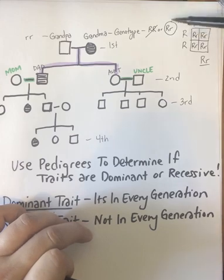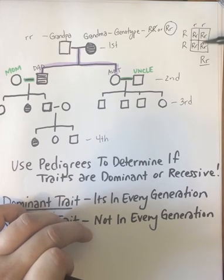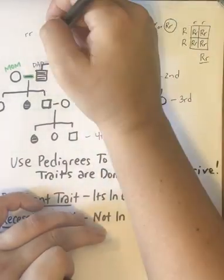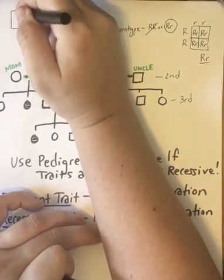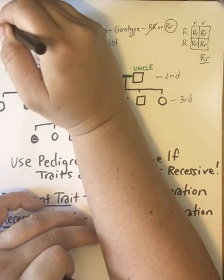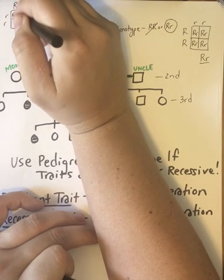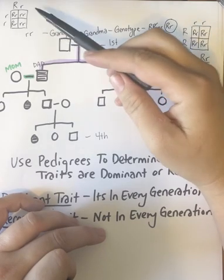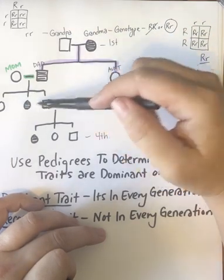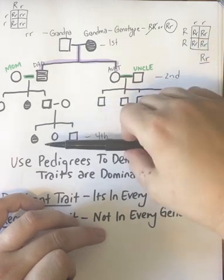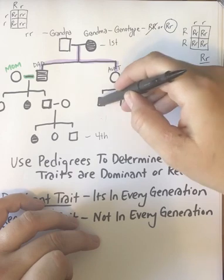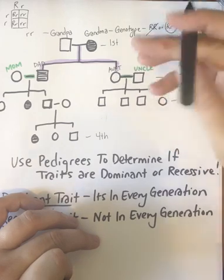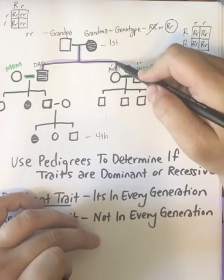So if we say the grandmother is heterozygous and the grandfather is homozygous recessive, then there is a 50-50 chance that the aunt and the dad can end up with the trait. By looking at the other generations, you can determine what the aunt and uncle's genotypes are. If their children don't have it and it's a dominant trait, then both the aunt and the uncle must be homozygous recessive.